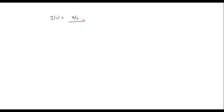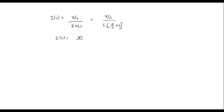I of S is equal to V by S divided by R plus L·s. I will rewrite this as V by S divided by L times the quantity S plus R by L, which gives I of S equal to V by L divided by S times the quantity S plus R by L.